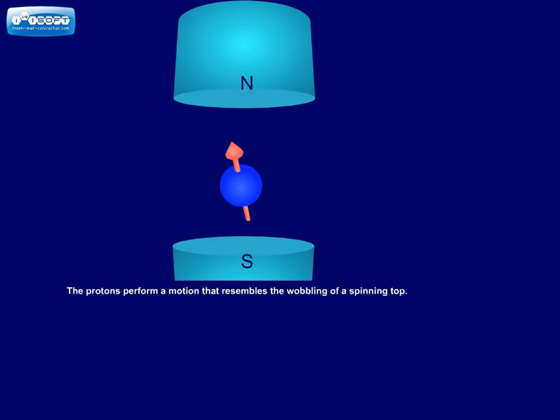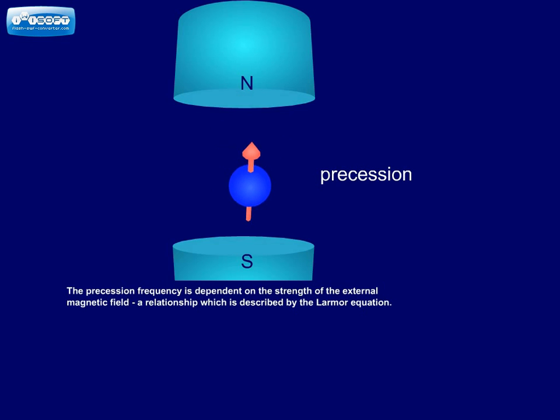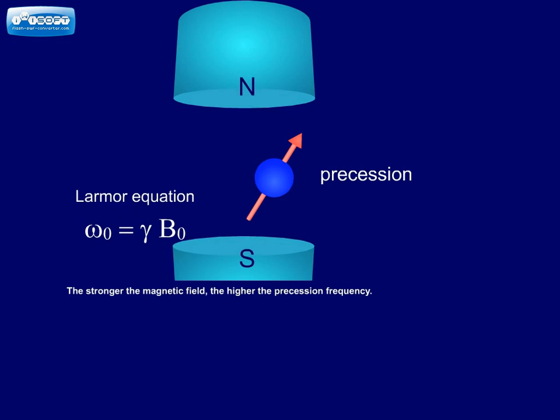The protons perform a motion that resembles the wobbling of a spinning top. This motion is called precession. The precession frequency is dependent on the strength of the external magnetic field, a relationship which is described by the Larmor equation. The stronger the magnetic field, the higher the precession frequency.